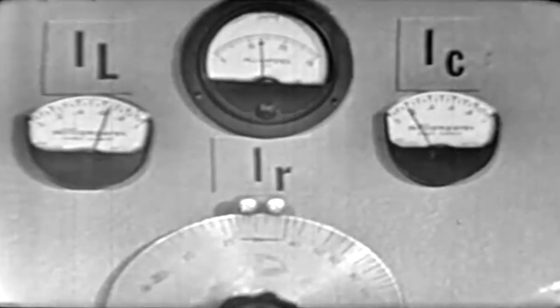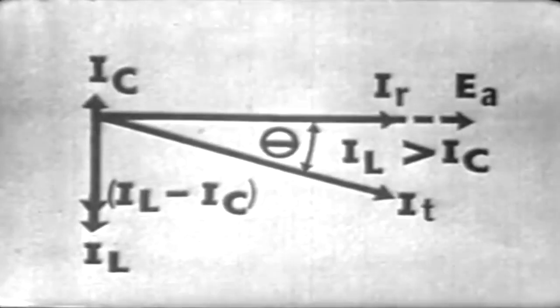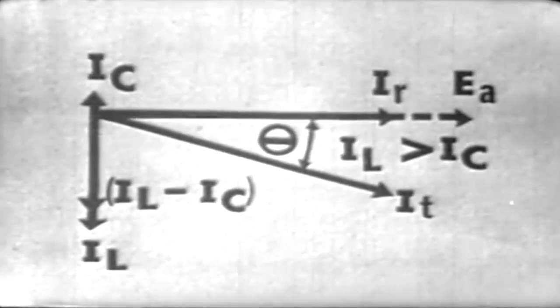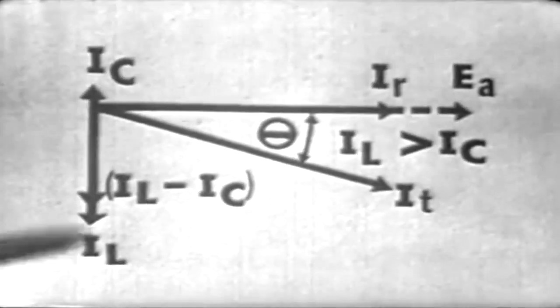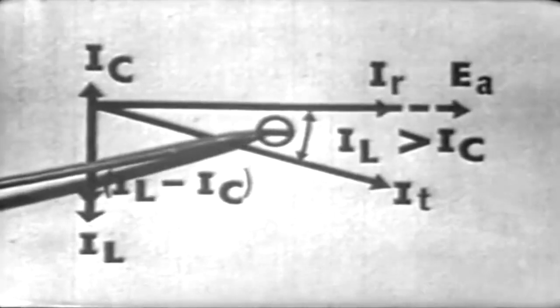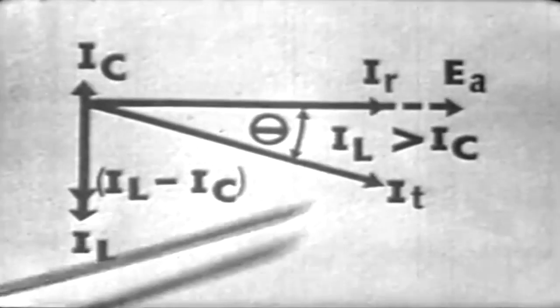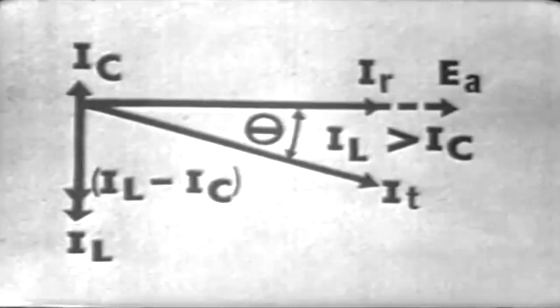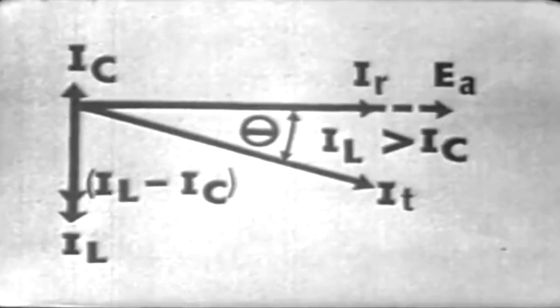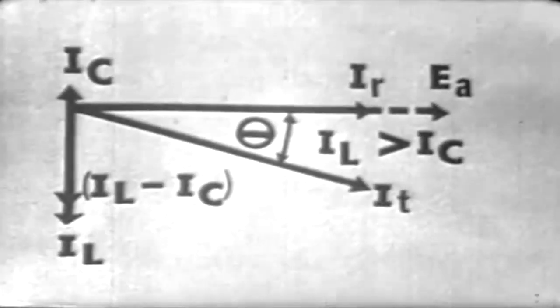This condition would now be represented vectorially where IL is greater in magnitude than IC. We now have a lagging phase angle. Remember, IL is greater than IC. This being the case, our circuit is now acting inductively.